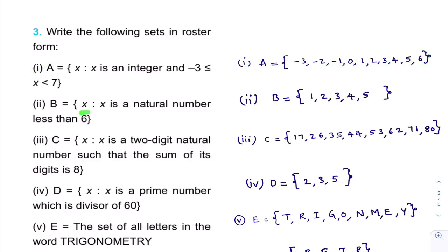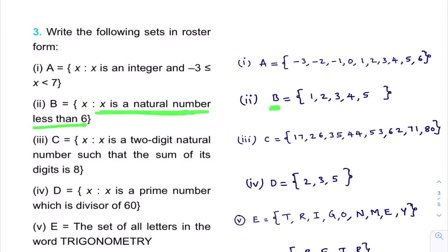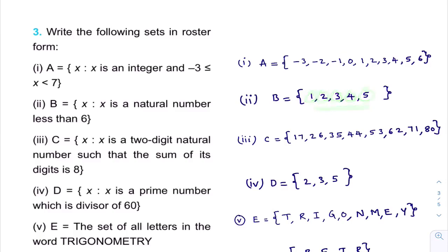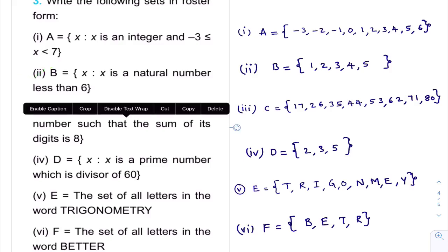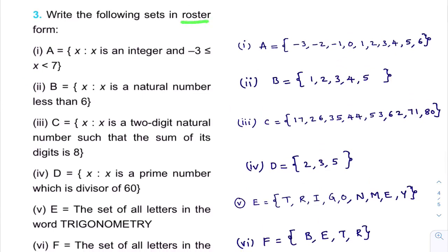Second one: x such that x is a natural number less than 6. It is very simple. Natural numbers are 1, 2, 3, 4, 5, 6... and there is a condition — natural number less than 6. The natural numbers which are less than 6 are 1, 2, 3, 4, 5. Roster method means all the elements of a set are listed and separated by commas within brackets.